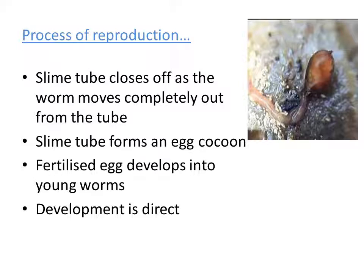This is the process of reproduction in earthworms. The young ones produced appear the same as their adults, and since there is no larval stage, this is called direct development. The process of reproduction is quite interesting and easy to understand. Students should practice the diagram of the reproductive system along with all the terminology of the male and female reproductive system, as questions for five marks are frequently asked in examinations.